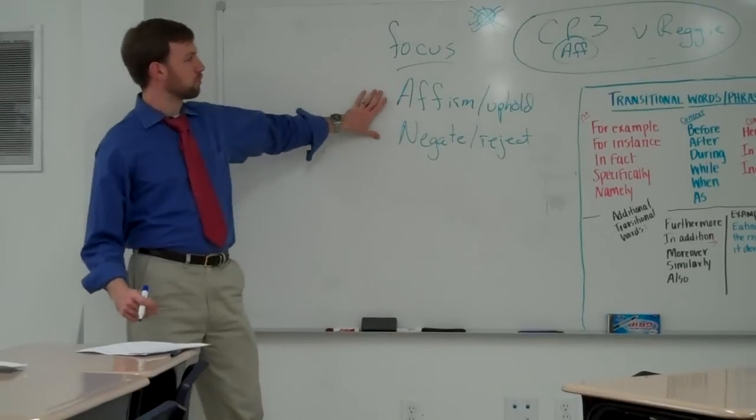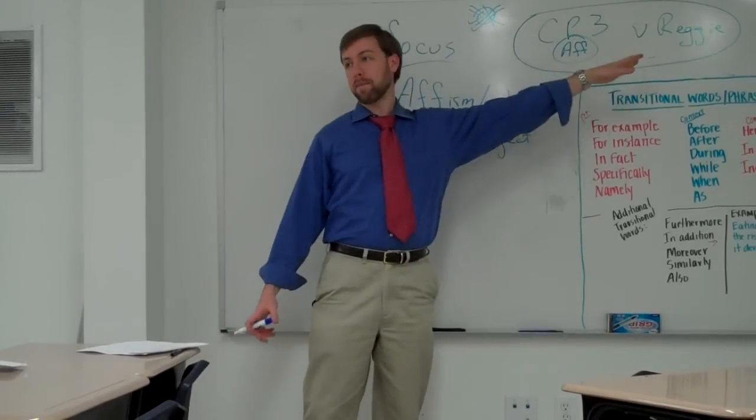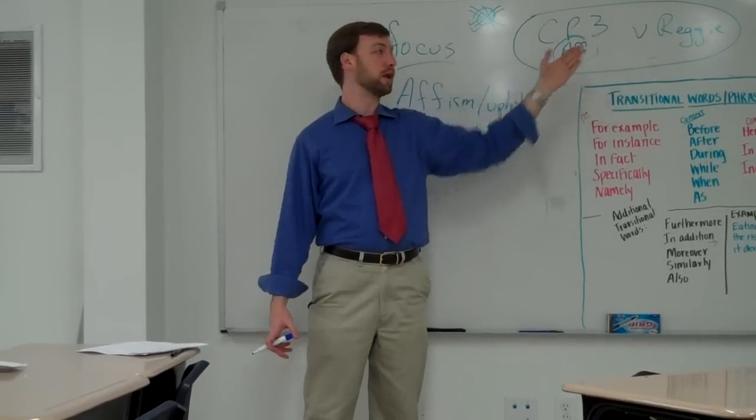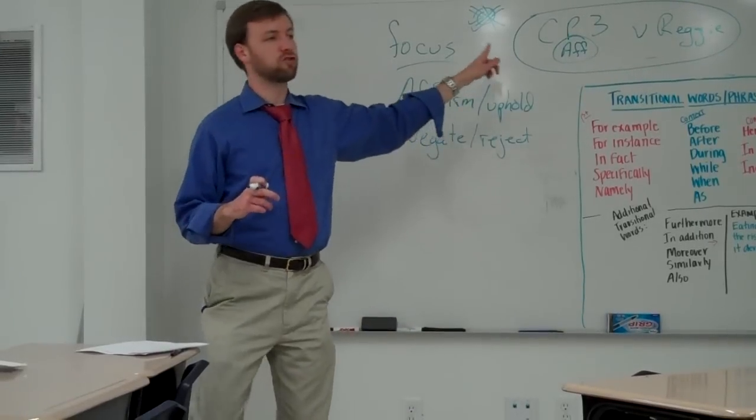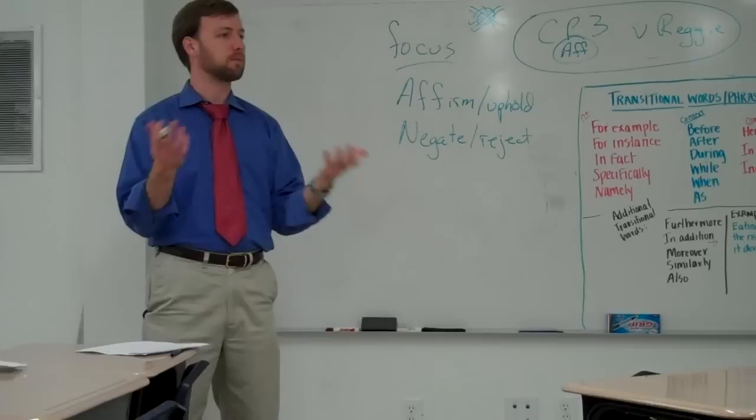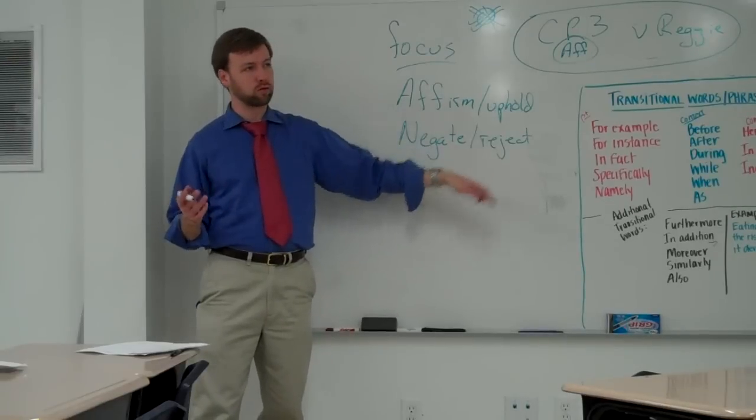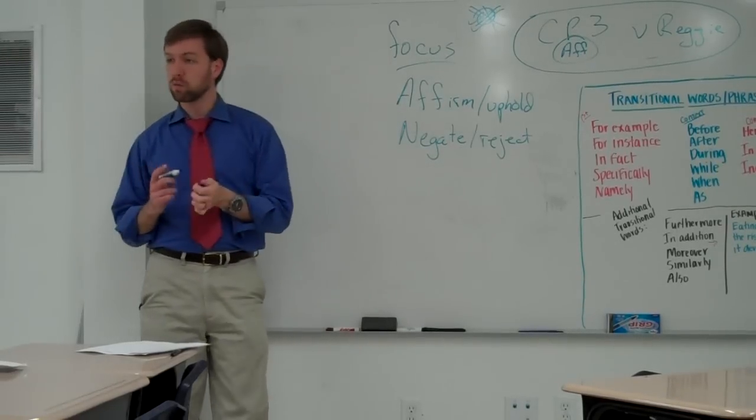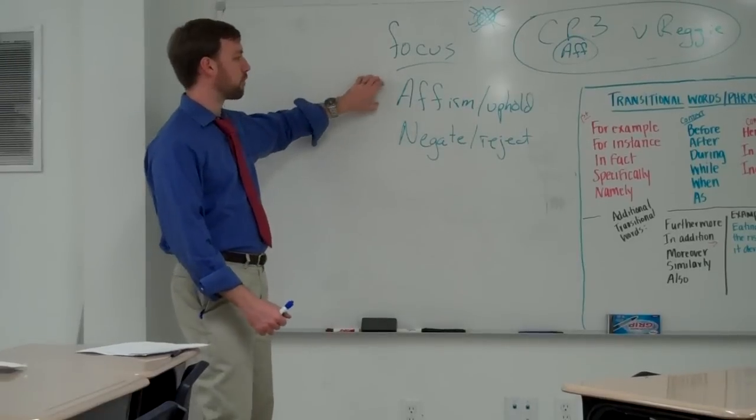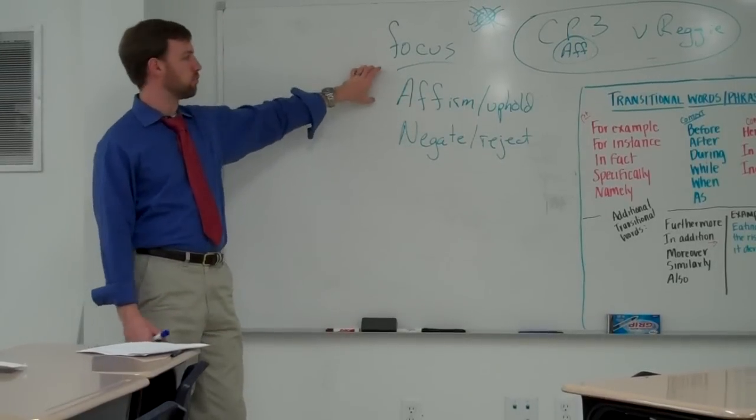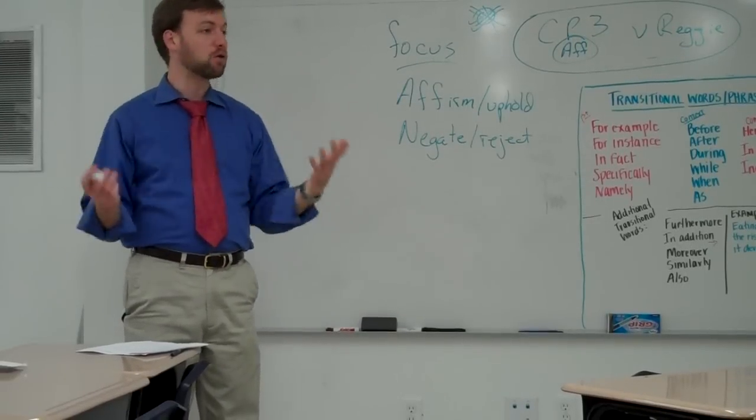And the negative team is required to negate or reject the resolution. And so at the end of the day, the negative team is going to say no, Chris Paul is not better than Reggie Bush. Maybe the negative is going to say Reggie Bush is better than Chris Paul. Or maybe the negative team is going to say that Reggie Bush and Chris Paul are equally talented athletes and that we can't really compare them. Both of those are legitimate ways that you're rejecting the resolution. So those are our two sides. We have the affirmative and the negative. And their jobs are to affirm or to negate the resolution.